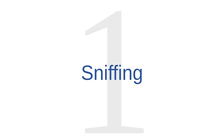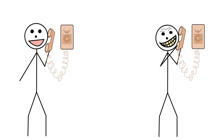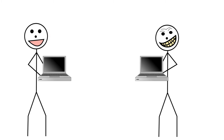Wireless security threat number one is sniffing. Have you ever seen a movie where somebody is having a private telephone conversation on a landline telephone, and then somebody else picks up a different phone somewhere else in the house and eavesdrops on that conversation? Wireless sniffing is a similar kind of eavesdropping that can happen on public wireless Internet connections. If you're in a coffee shop surfing the web, a cybercriminal within range of that wireless network can use a variety of methods to intercept the signals between your computer and the wireless router.